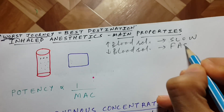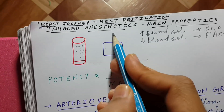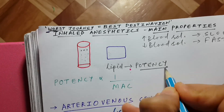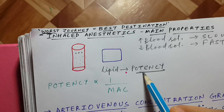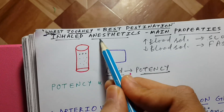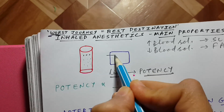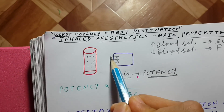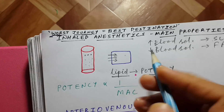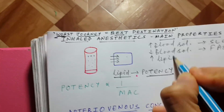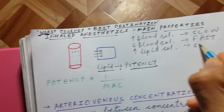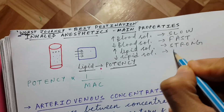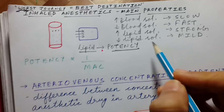The solubility of the inhaled anesthetic in lipid determines the potency. Potency means whether the anesthetic is strong or mild. If the anesthetic is more lipid soluble, it will quickly cross the cell membranes because the cell membrane contains lipid. It will enter the cell and produce its effect. So if it is highly lipid soluble, it will be a very strong anesthetic, and if it is less lipid soluble, it will be a mild one.